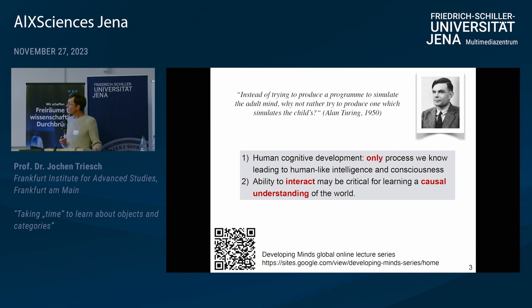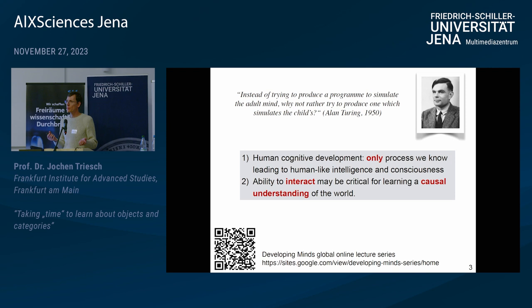Second, the ability to interact — as this child is exploring its world with its body, interacting with objects and the social environment — the ability to interact may in fact be critical for learning a causal understanding of the world. Many of you are scientists and you do experiments. Why do you do experiments? Well, to unravel the causal mechanisms of a complex system by intervening here and seeing what changes in the outcome this leads to.